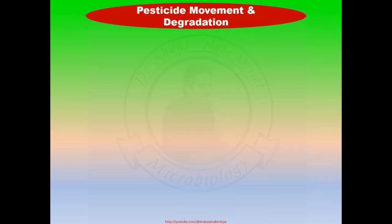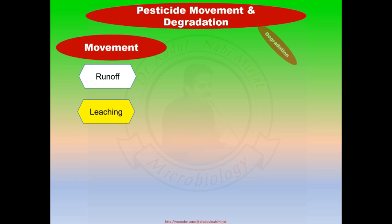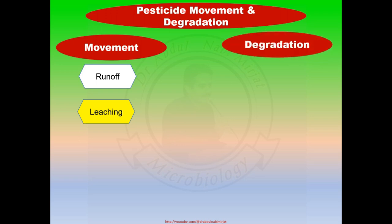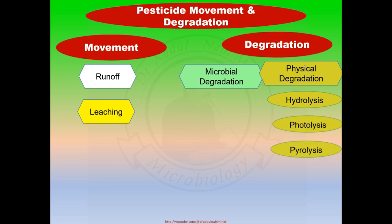The movement of pesticides is based on two processes: runoff and leaching. Degradation of pesticides is divided into several types such as microbial degradation, physical degradation including hydrolysis, photolysis, and pyrolysis, and also volatilization.